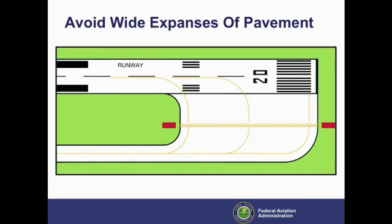These wide pavements require placement of signs far from a pilot's eye. As shown here, signs are virtually invisible to the pilot following the middle centerline because of the viewing angle and the excessive distance between the signs. Low visibility conditions, or a pilot's focus on the centerline, can magnify the problem. This is especially critical at runway entrance points.